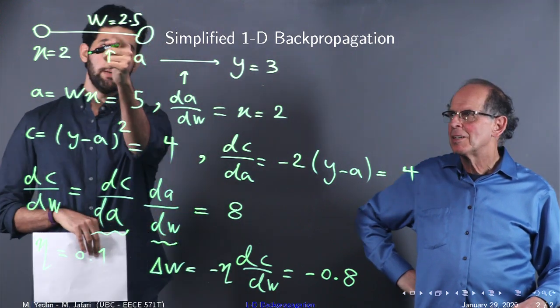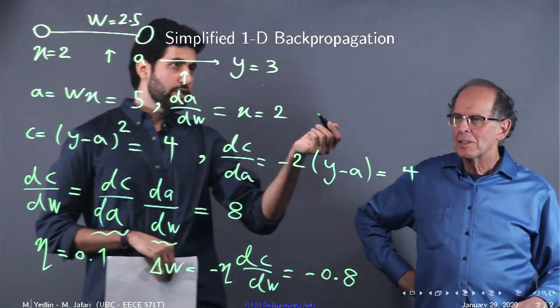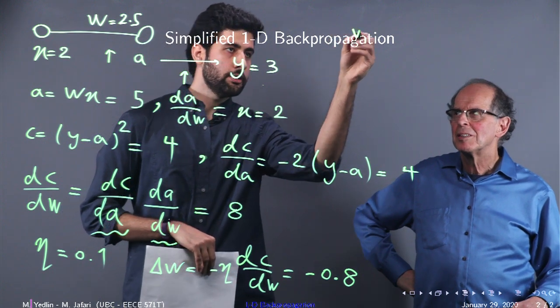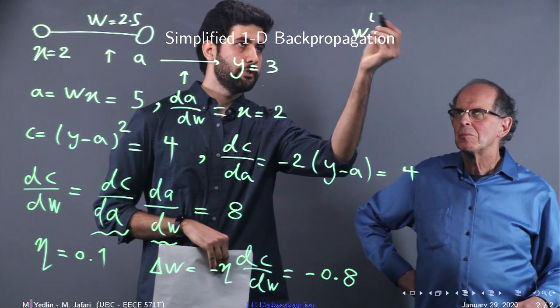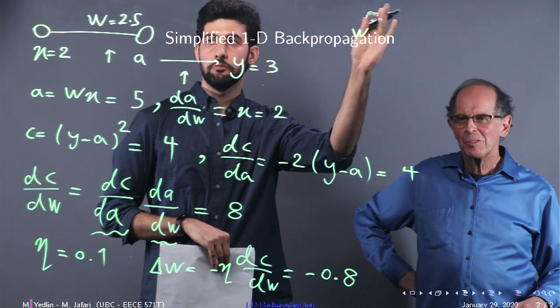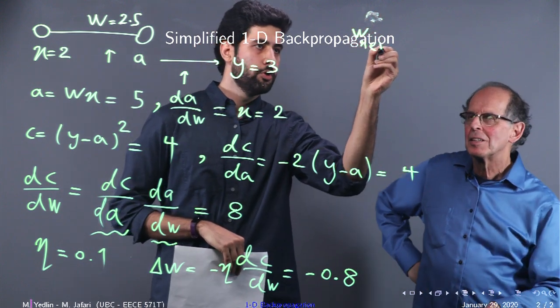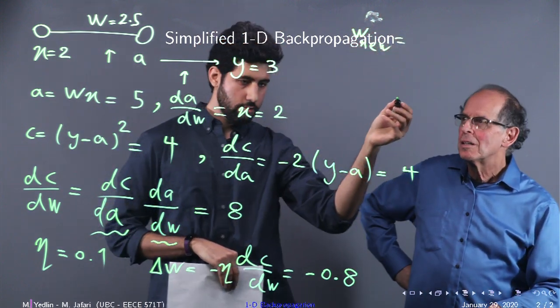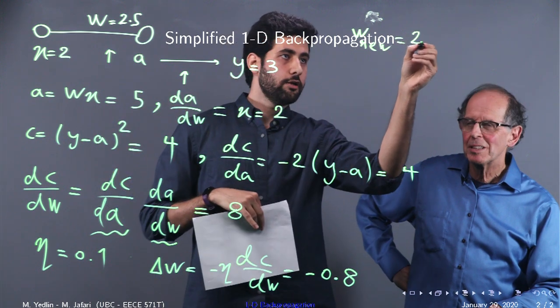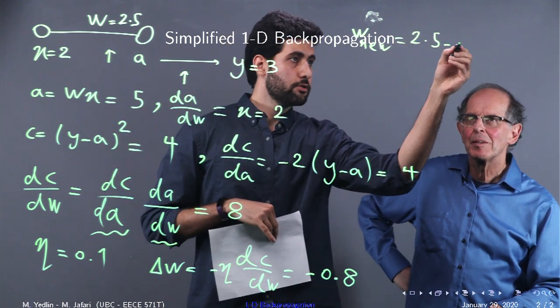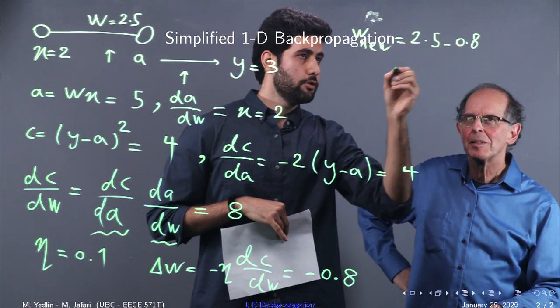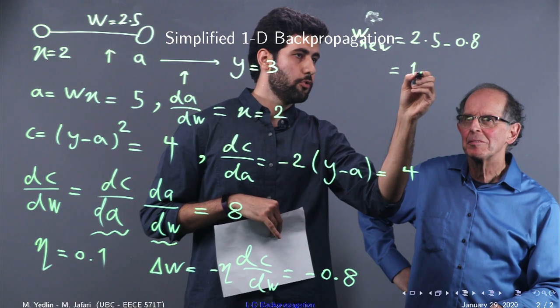So, if we do that to W, our new W, W, T, maybe W, if that. New, new one. Yeah. Double new. Would be 2.5 minus 0.8. Minus 0.8, which would be 1.7. 1.7.